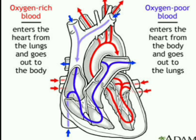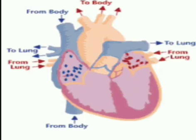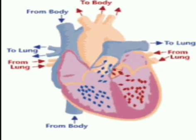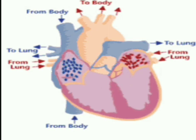The upper two chambers are called auricles and the lower two chambers are called ventricles. The left atrium and the left ventricle contain oxygen-rich blood. The right auricle and right ventricle contain blood having carbon dioxide in it. The main function of the heart is to pump blood and keep it moving in the blood vessels.